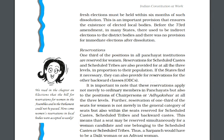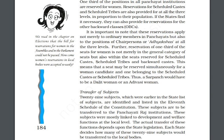If the state finds it necessary, they can also provide reservation for the OBCs — Other Backward Classes. It is important to note that this reservation is not only for ordinary members of the panchayat, but will also be applicable on the positions of chairpersons and adhyakshas at all three levels. Furthermore, the one-third reservation for women will not be merely in the general category, but seats will also be reserved for women of scheduled castes, scheduled tribes, and backward classes.